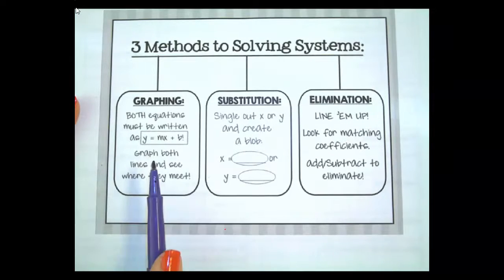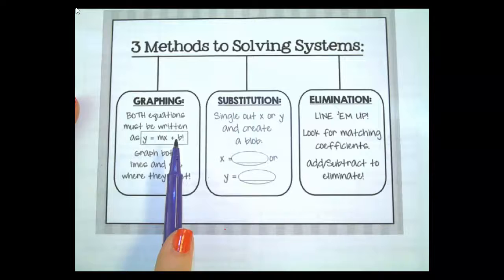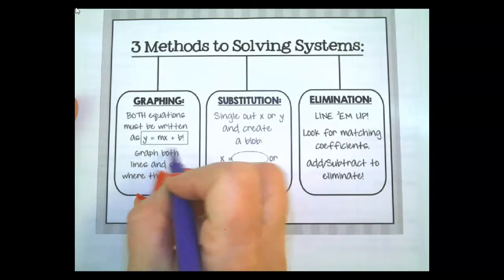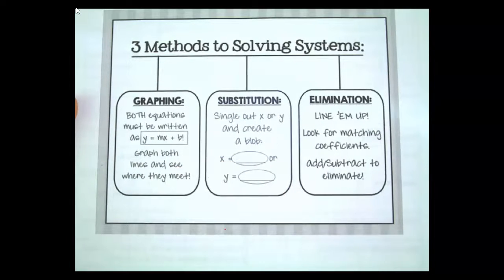So we can do that in three different methods depending on what's given. So we're getting really good at graphing them and when we graph them we really like them to look like this which is in that slope-intercept form. So you would graph them and where your lines meet would be your solution.